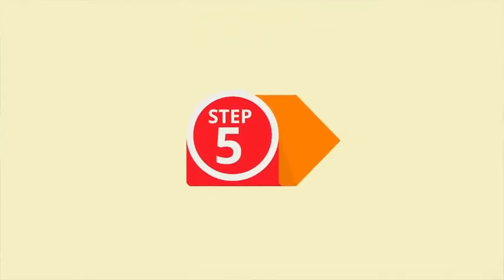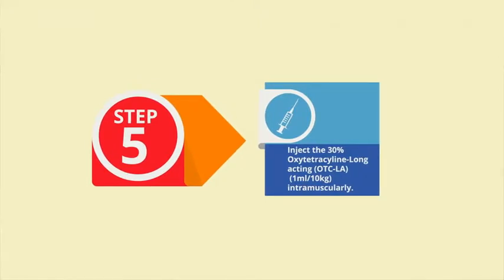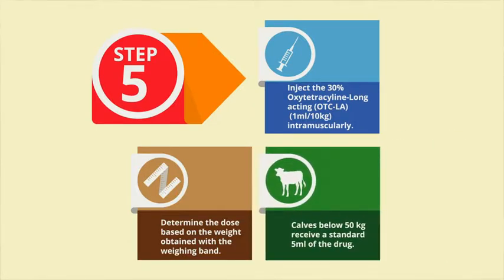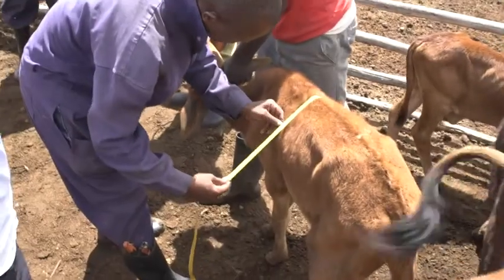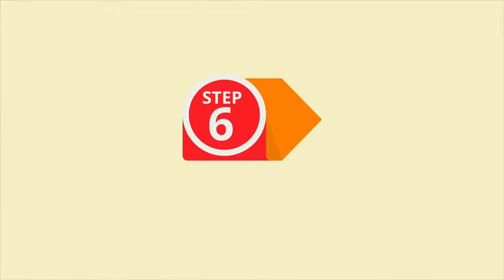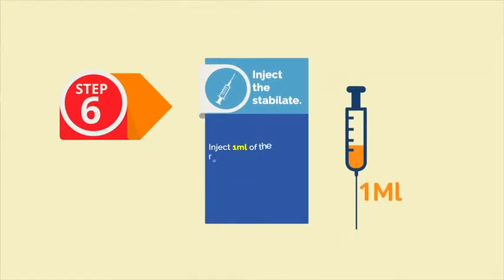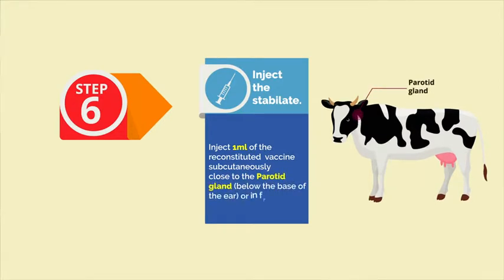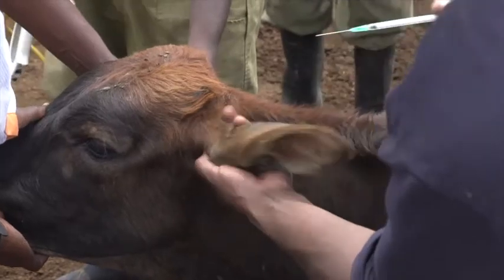Step 5: First inject 30% oxytetracycline long-acting (OTCLA) at 1 milliliter per 10 kilograms intramuscularly. Determine the dose based on the weight obtained with the weighing band. Calves below 50 kilograms receive a standard 5 milliliters of the drug. Step 6: Inject the stabulate. Inject 1 milliliter of the reconstituted vaccine subcutaneously, close to the parotid gland below the base of the ear or in front of the prescapular lymph node.